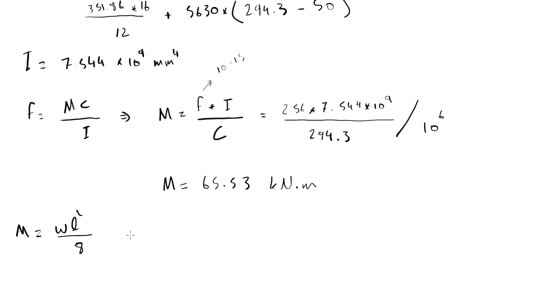Now this is the resisting moment of the concrete section. Now from the moment we can find the maximum permissible load on the beam. M = wL²/8 for simply supported beams. And leaving w alone, w = 8M / L². So it will be 8 multiplied by 65.53 divided by 4², which is the span of the beam. This equals to 32.77 kN/m.